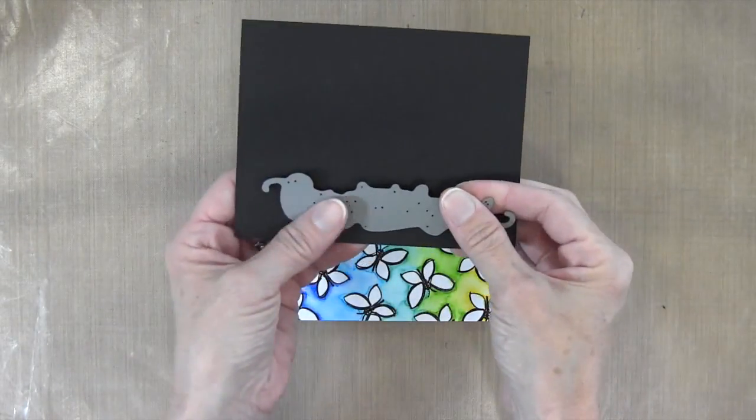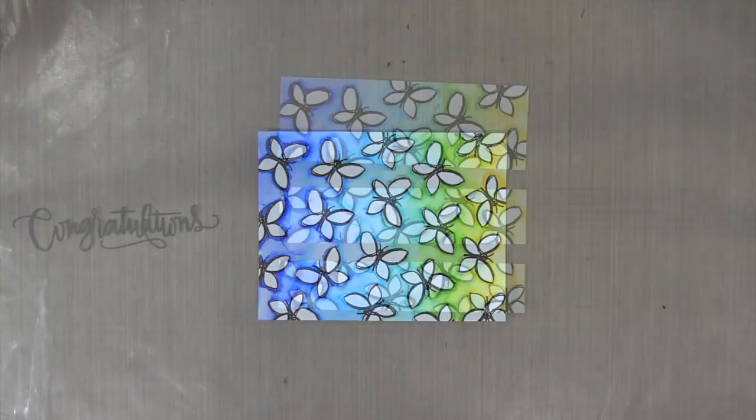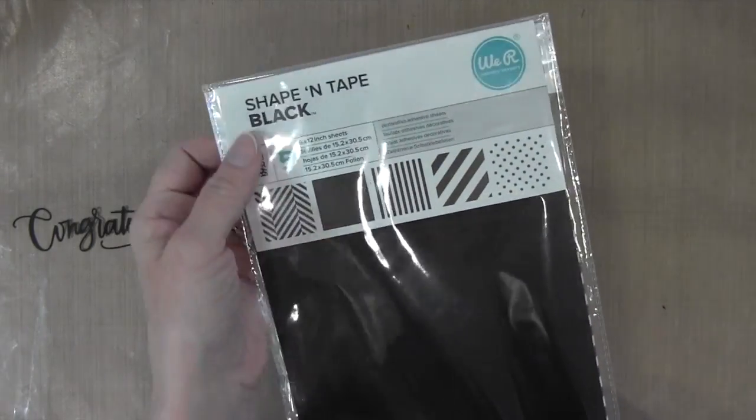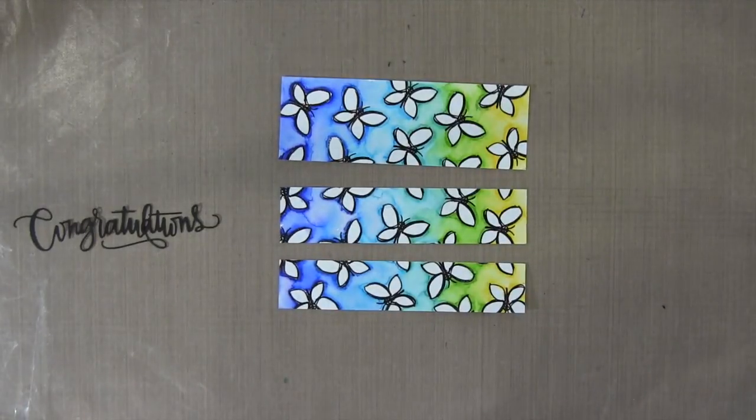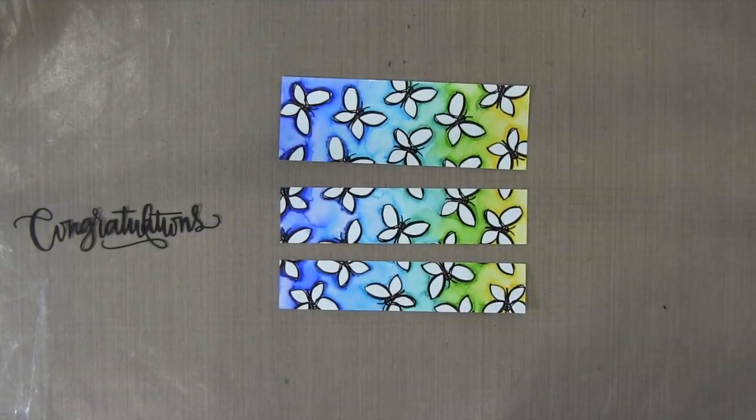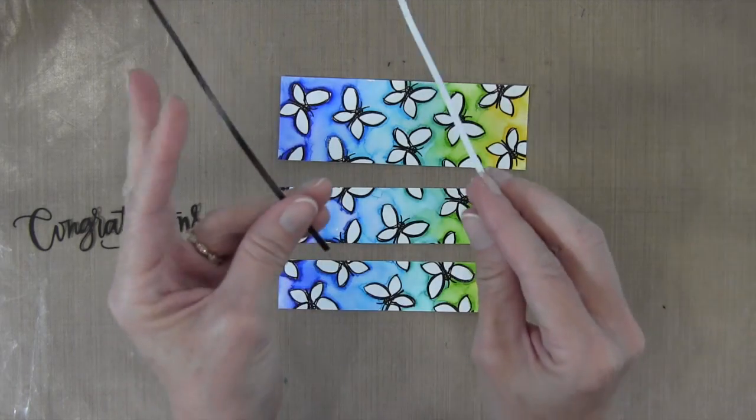I have some Stampin' Up black cardstock, and I'm going to cut this out with my Big Shot. I'm also using Shape and Tape for a small black border. Now I've cut my panel. I forgot, I don't know what happened to the camera, but the bottom piece is 1 and 1/8 inches.